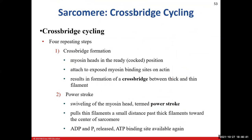The second step is the power stroke. This is where we actually see movement — the thin filament moving past the thick filament. This is where, if you're starting to bend your elbow, this is the power stroke phase. The myosin head swivels and pulls the thin filament past the thick filament, always toward the center of the sarcomere during a concentric contraction. As this occurs, that ADP molecule and inorganic phosphate molecule pop off the myosin head, meaning the myosin head can now bind another ATP molecule — this is why you need ATP.